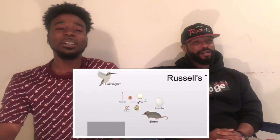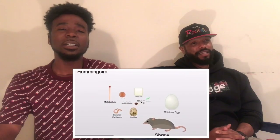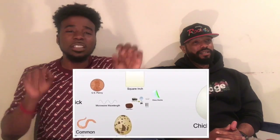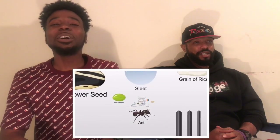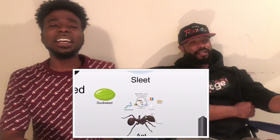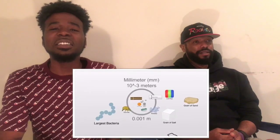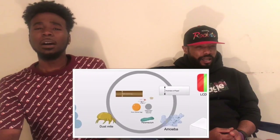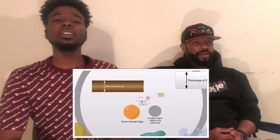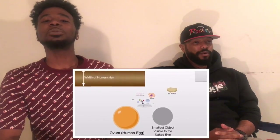Shrew, hummingbird, chicken egg — this is small — matchstick, square inch. A chicken egg looks like the same size as a matchstick. Coffee bean, sunflower seeds. Duckweed — smallest thing an ant can see. Largest bacteria, grain of salt, millimeter, grain of sand, dust mite.